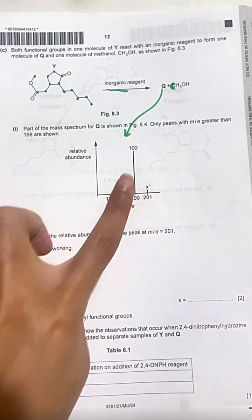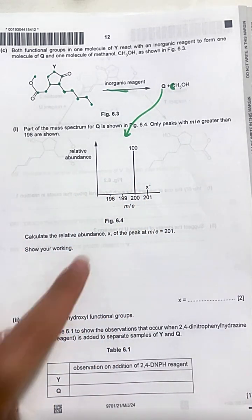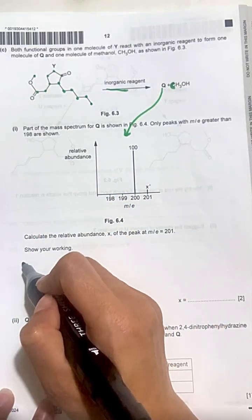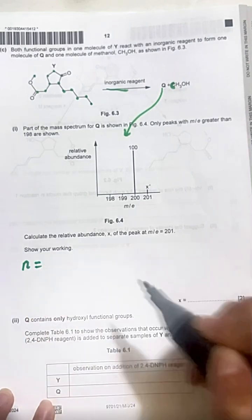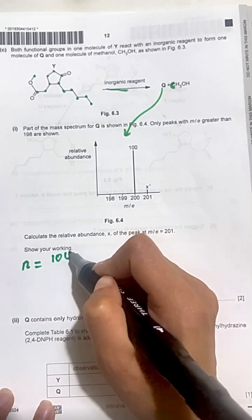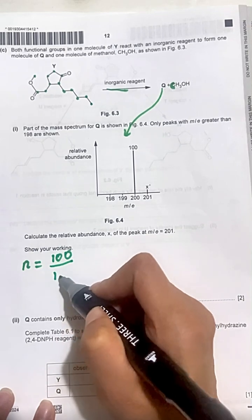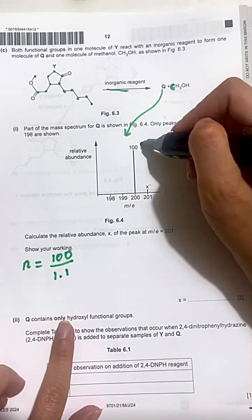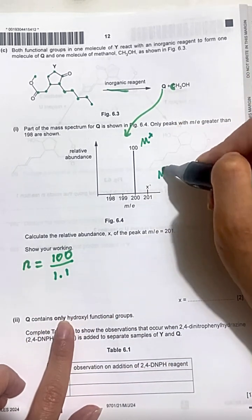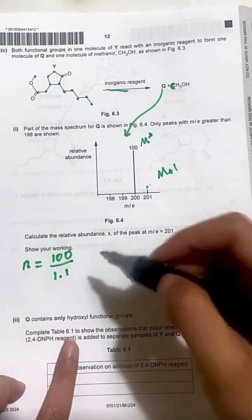Whenever you see this spectrum, you must write the law related to it, which is number of carbons equals 100 divided by 1.1. It is the relation between M plus and M plus 1.